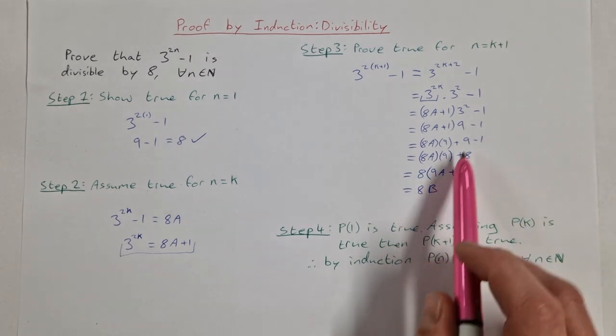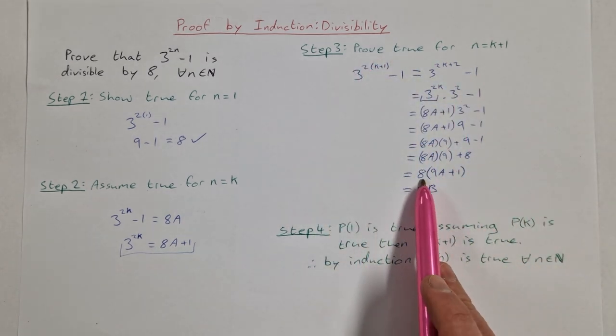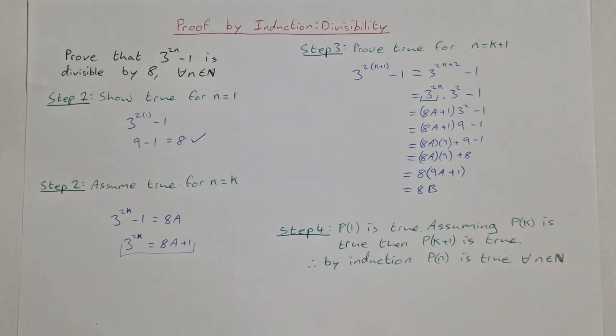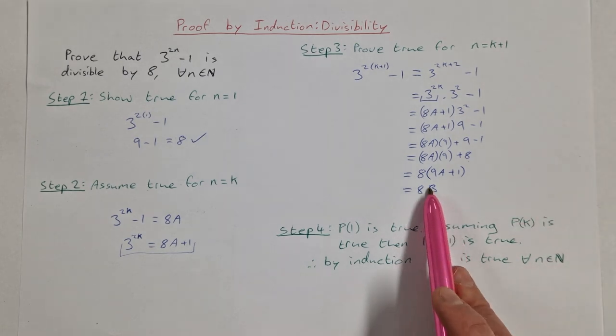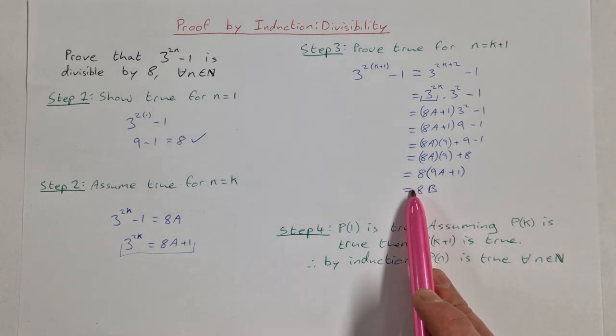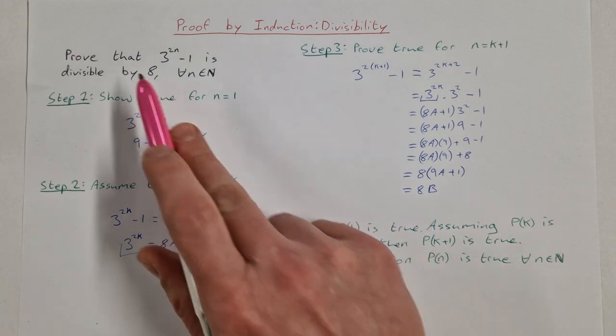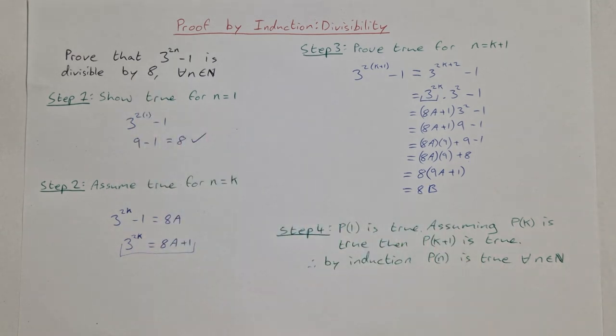And that means it is divisible by 8 because I've got it down to a space where I have 8 times some number. And that's the aim for these divisibility proofs: to get down to a line where you have the factor that you want, in this case 8, times something else, some other number.